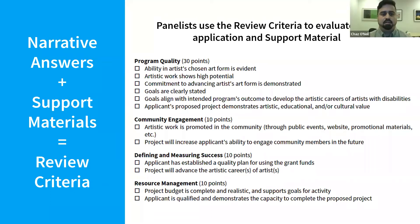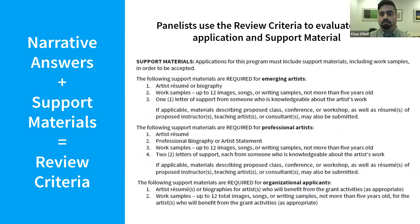Moving on to narrative answers plus support materials — together these equal your review criteria and are the core contents of your application. Panelists will use the review criteria to evaluate your application and support material. Review the checklist in the program guidelines so your proposed project can touch on as many of these points as possible. You will also add your support materials, which are your images, bios, resumes, and letters of recommendation. The screen shows that checklist from the guidelines, listing all requirements for emerging artists, professional artists, and organizational applicants.